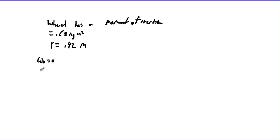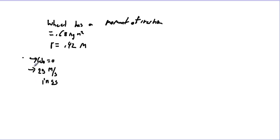This wheel is to accelerate from rest — initial angular velocity zero — to 25 meters per second in five seconds. You have to stop and think here, because the moment of inertia is angular but 25 meters per second is a linear velocity. You can't mix the two; you have to convert back and forth. So how much torque must be applied?